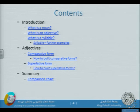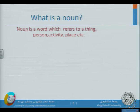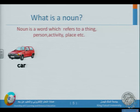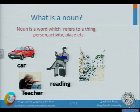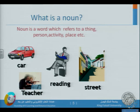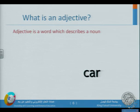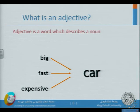We have the comparative form and the superlative form, and how to build each one of them. What is a noun? A noun is a word which refers to a thing, person, activity, or place — for example: teacher, reading, street. All of these are names.